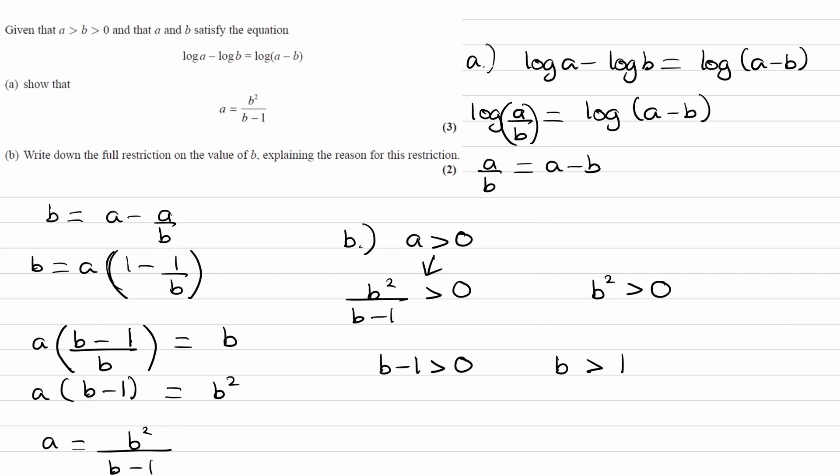And our old constraint for B was that B had to be bigger than 0. But now we know that B also has to be bigger than 1. Well, the combination of these two inequalities, if B has to be bigger than 0 and B also has to be bigger than 1, well, if you were to write that as one inequality, that just means that B is bigger than 1. So that will be our answer.